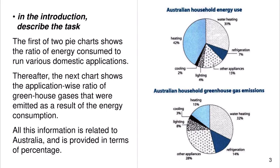In the introduction, describe the task. The first of two pie charts shows the ratio of energy consumed to run various domestic applications. Thereafter, the next chart shows the application-wise ratio of greenhouse gases that were emitted as a result of the energy consumption. All this information is related to Australia and is provided in terms of percentage.